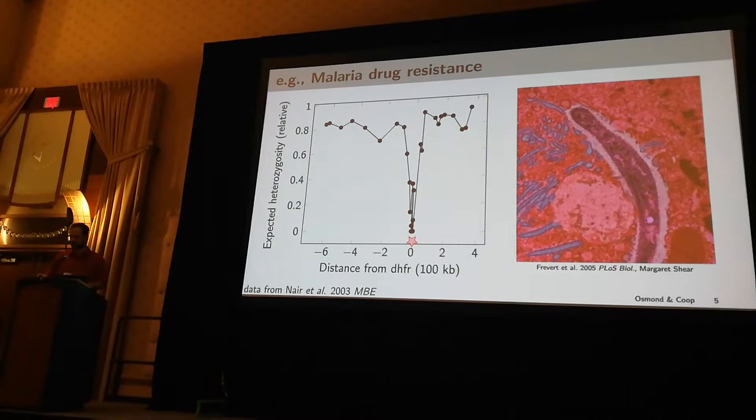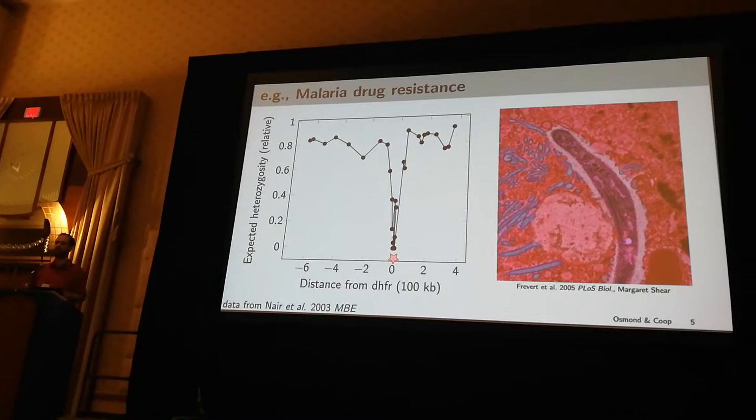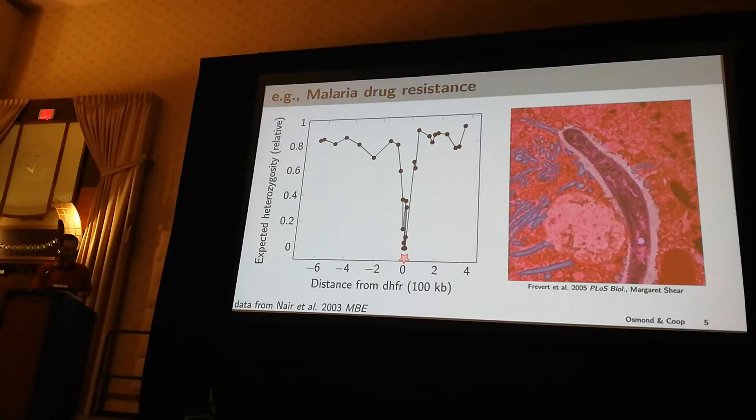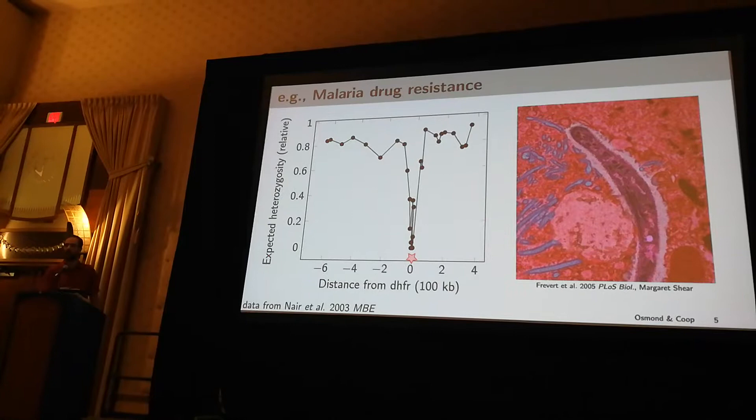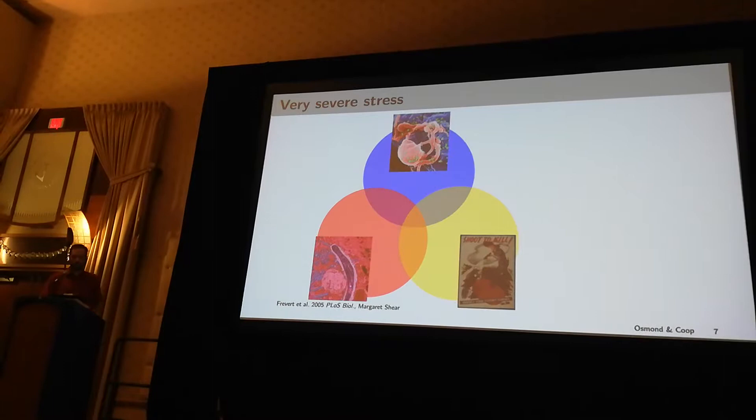While in the HIV case we got to actually see the sweep occur, in many cases we just have sequenced genomes, but we can use these signatures of selection to scan across these genomes and look for sites that may have had selective sweeps occur recently in the past. This has been very successful, for instance, in locating resistance loci in the malaria parasite Plasmodium, as well as insecticide resistance loci in Drosophila, where you see these characteristic dips in diversity.